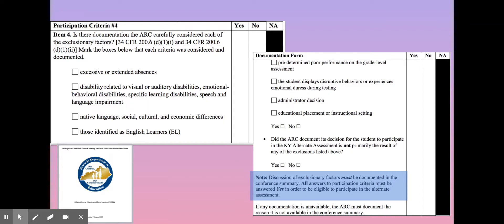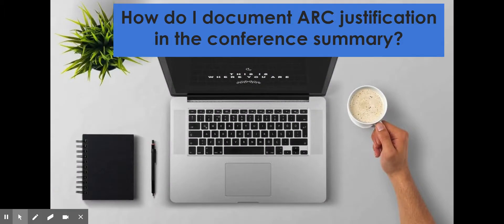Make sure that all questions are answered, as that is something that will be considered as part of the yes/no review process. At this point, I invite you to pause the video for a minute and review participation criteria one through four — how you would document, what documents you need to review, the language that you would need to use in the conference summary. If there are any areas where you are not crystal clear, flag that area, put a star by it, and then check in with your special education consultant or director of special education for guidance.